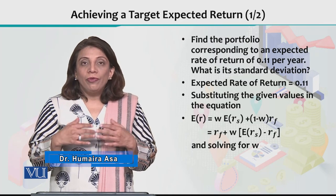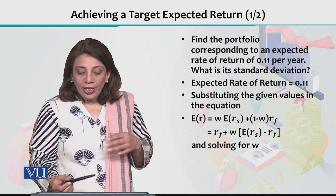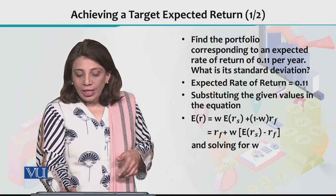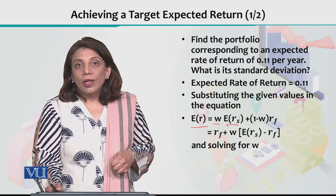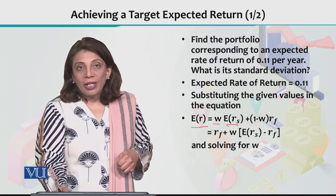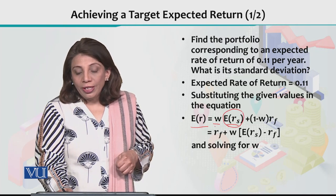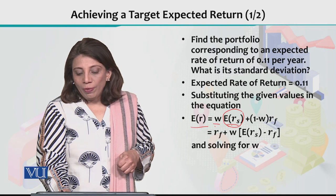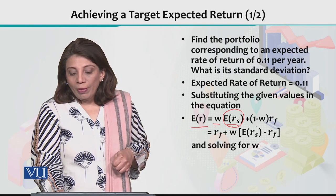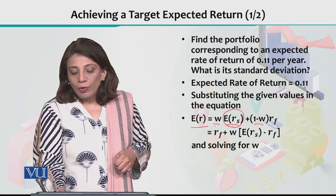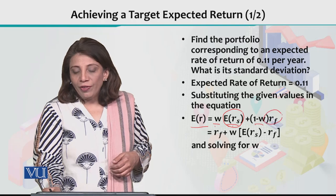For that matter, we use the equation: the expected rate of return is equal to the proportion invested in the risky asset multiplied by the expected return on the risky asset, plus (1 - W), which is the proportion invested in the risk-free asset, multiplied by the risk-free return.